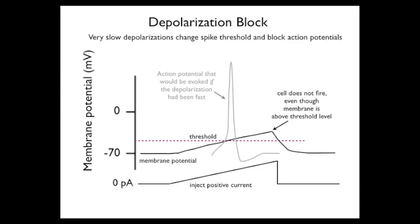The triggering of an action potential is blocked by the slow depolarization, hence the term depolarization block. The reason for the blockage is that the slow depolarization progressively inactivates sodium channels. So when the membrane is depolarized to its normal threshold value, not enough sodium channels are in an available state, so that very few additional channels can open, and thus they cannot generate the upstroke of the action potential.